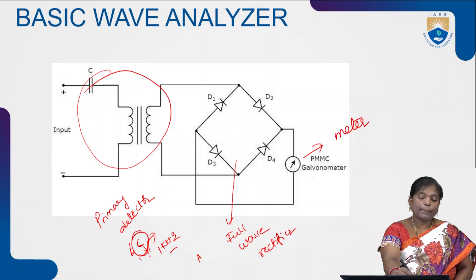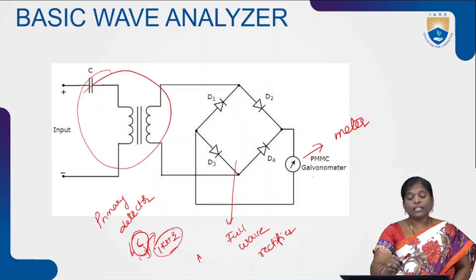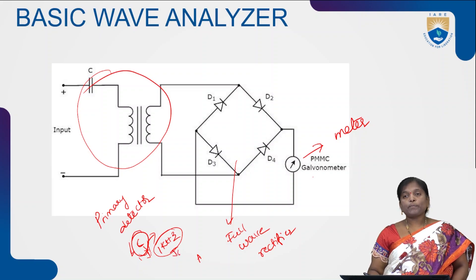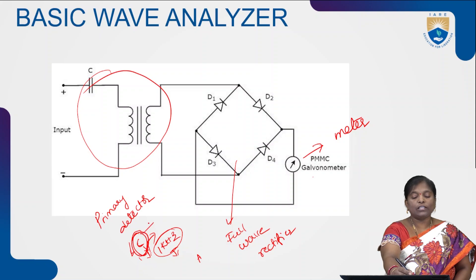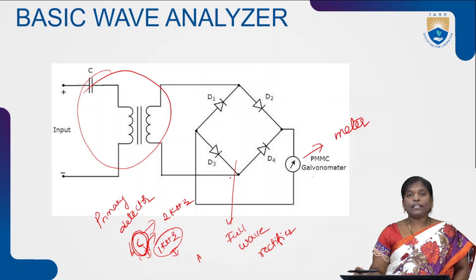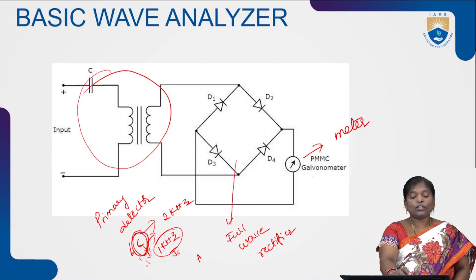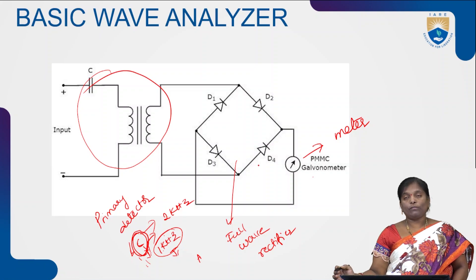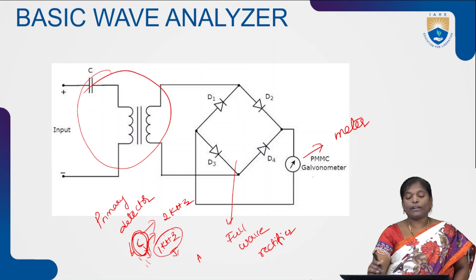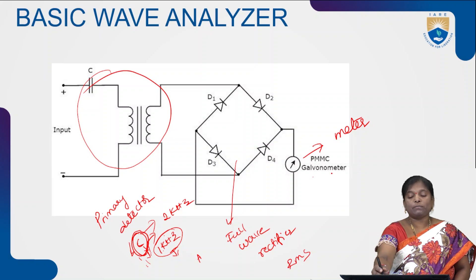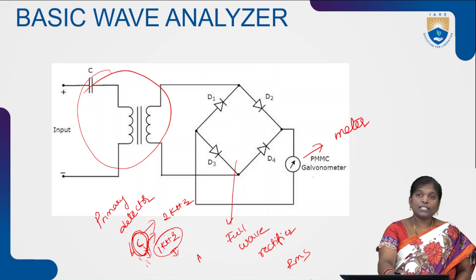By varying the capacitance value, we get different frequencies. In the first instance, we get the frequency response at 1 kilohertz. After that, by varying the capacitance value, the frequency shifts from 1 kilohertz to 2 kilohertz. Each time by varying capacitance, we choose a particular frequency and find out the magnitude of the incoming signal using the full-wave rectifier, which also gives the RMS value. The DC voltage is finally measured in the PMMC meter.